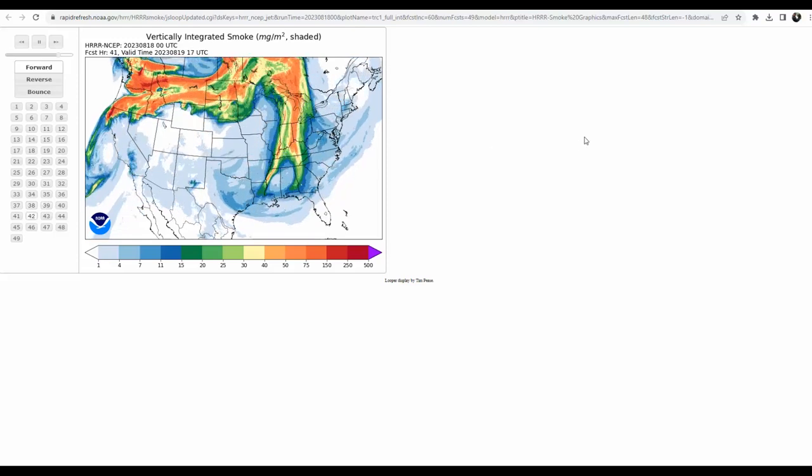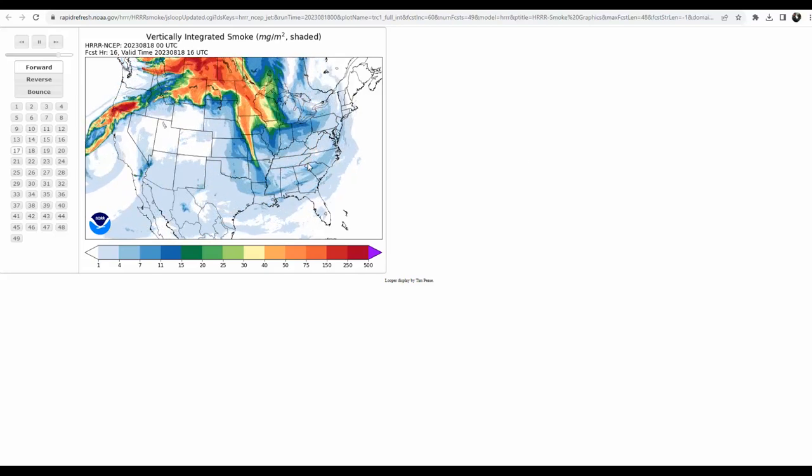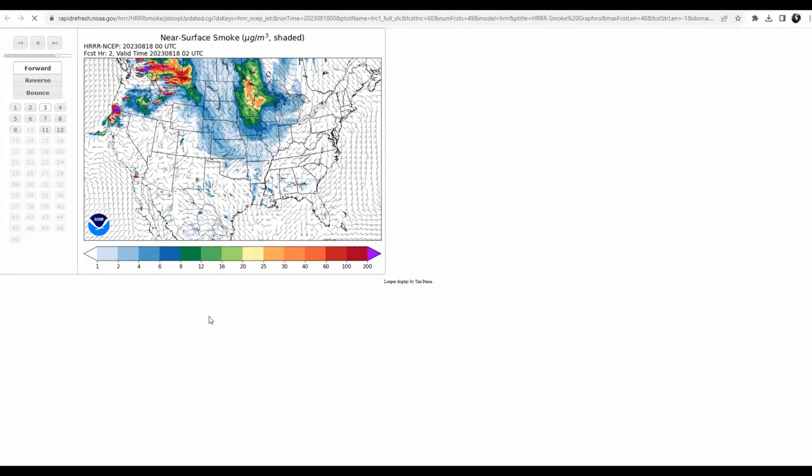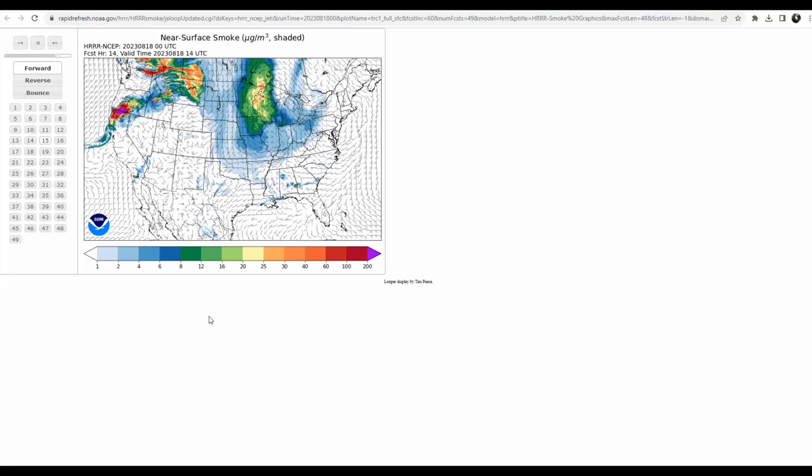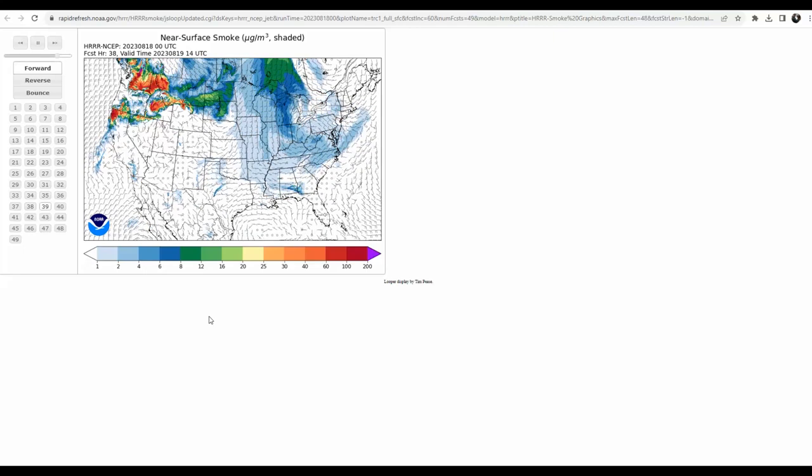You can also use your browser zoom controls in order to expand this model. Of course, if I wanted to look at my near surface smoke, then we would just go again under the loop column and click on the near surface smoke. Once again we wait for it to load, and eventually here we are going to be seeing this looping model that is focusing on the near surface smoke.